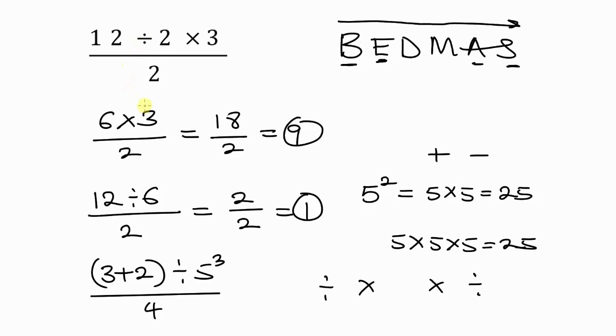Now look at the given question. You notice that we have division first before multiplication, so we work with the division. So 12 divided by 2 is 6, now times 3, all over 2. Now 6 times 3 will give 18, and 18 divided by 2 will give you a result of 9.